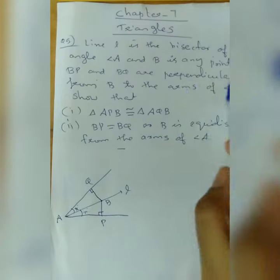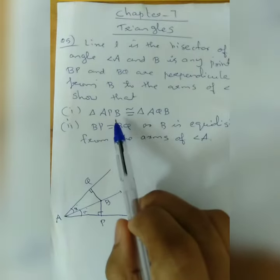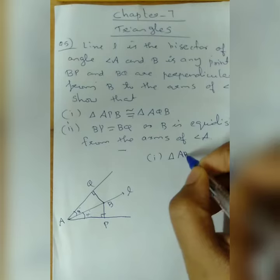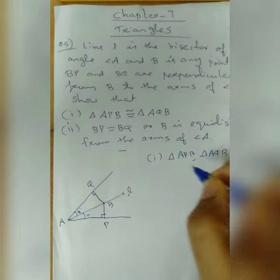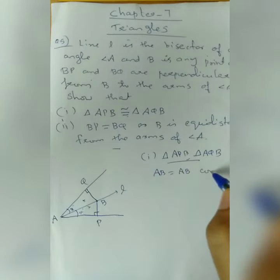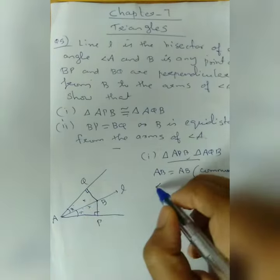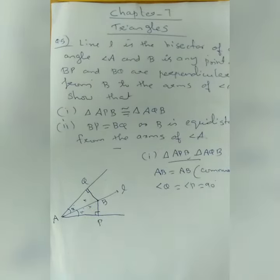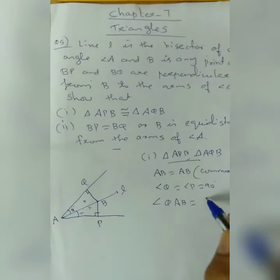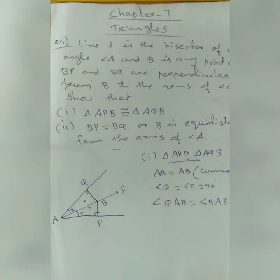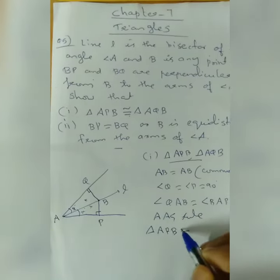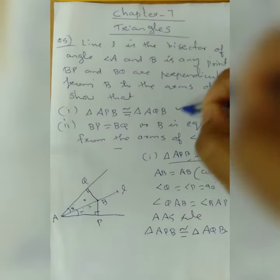BQ and BP are perpendiculars from B to the arms of angle A. Consider triangle APB and triangle AQB. AB is the common side. Also, angle Q is equal to angle P, both equal to 90 degrees. Since L is the bisector of angle A, angle QAB is equal to angle BAP. Therefore, by the AAS rule, triangle APB is congruent to triangle AQB.